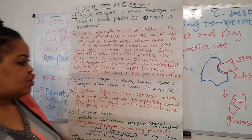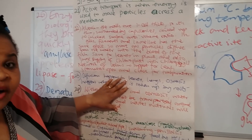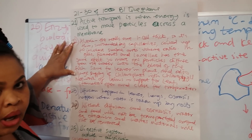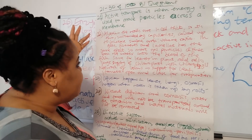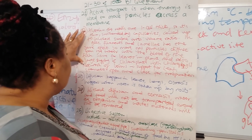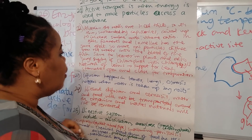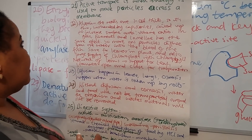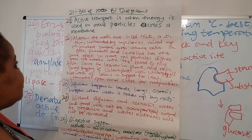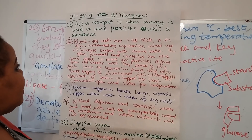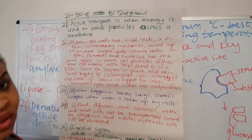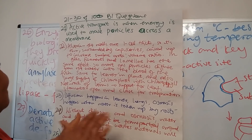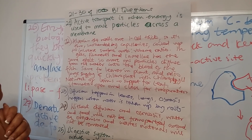This is the third video of a series of ten, giving a total of a hundred questions I've put together. This one might be slightly longer because for question 22 I'm going to do a more detailed explanation. I want to cover questions 21 to 30 of the 100 B1 questions. So, what is active transport?